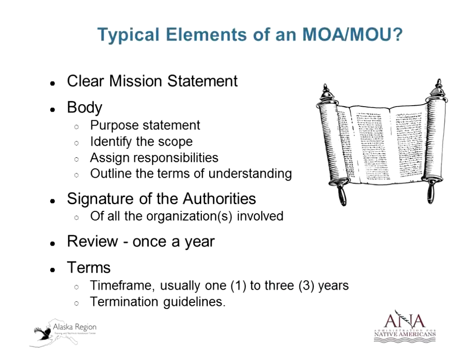Typical elements of an MOA or MOU include a clear mission statement, a main body with a purpose statement, scope identification, assigned responsibilities, terms of understanding, signatories and signature lines, and usually a clause for reviewing the agreement annually with a defined time frame. Many MOAs and MOUs I've seen are short-term, but if it's a general framework MOA it could be longer-term.